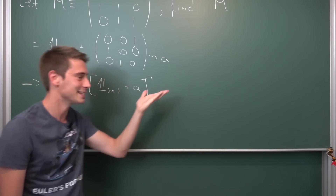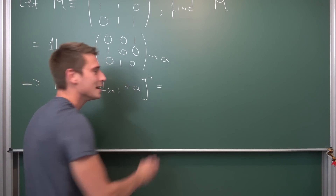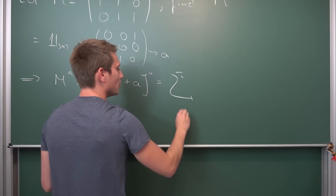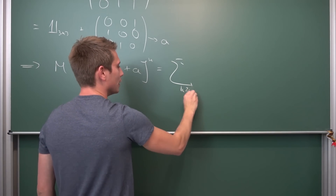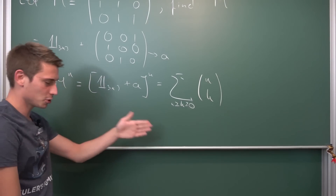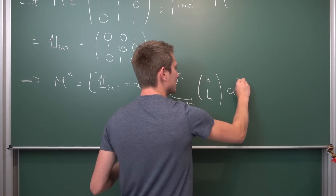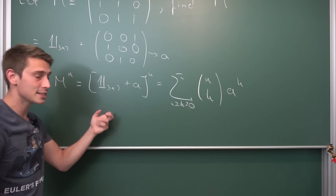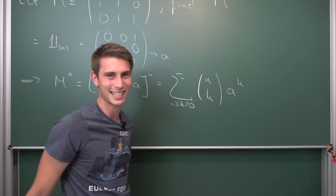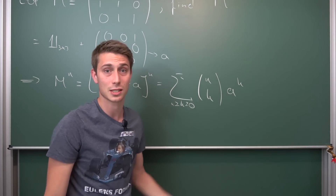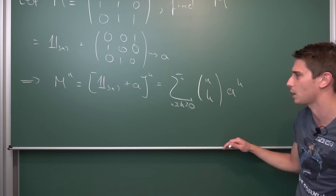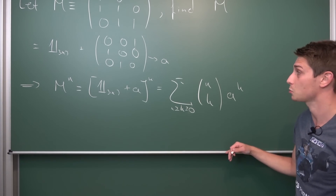Meaning we have some running index bounded between 0 and n, which gives us n choose k terms. We are going to make it easy for ourselves - this is A to the kth power times the identity matrix in three dimensions to some power. The identity matrix to any power is just the identity matrix itself, and the identity matrix times another matrix is just that matrix. So our expression reduces nicely, and now it's up to us what we are going to do.